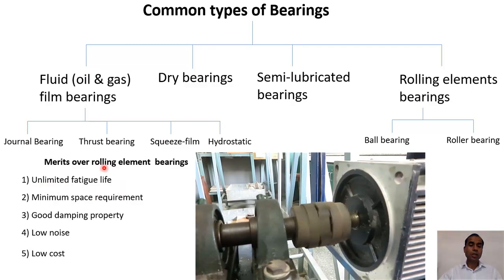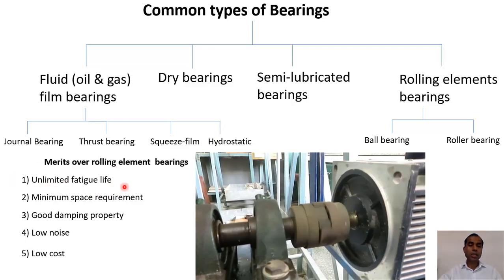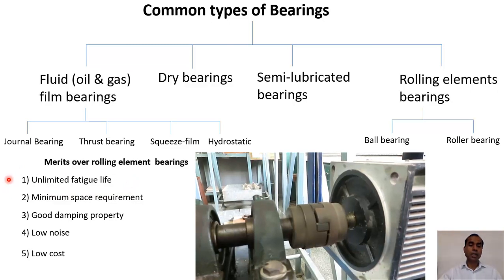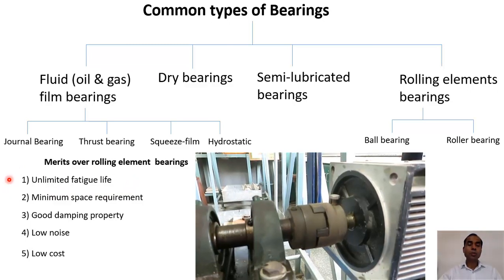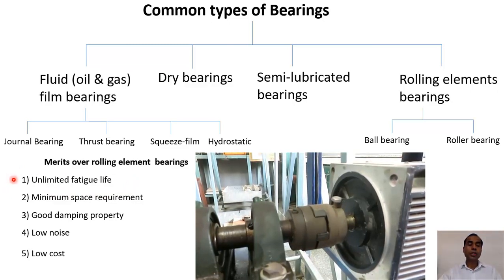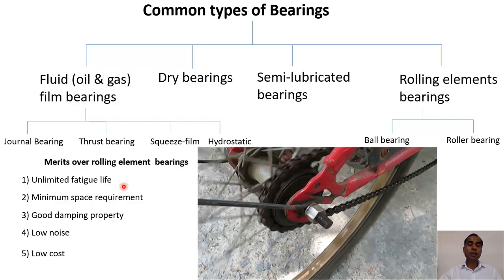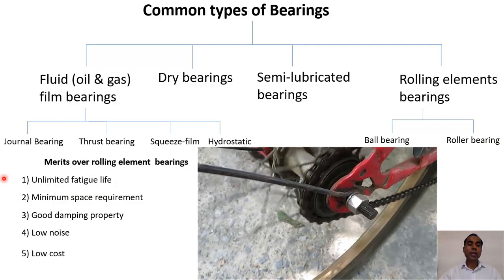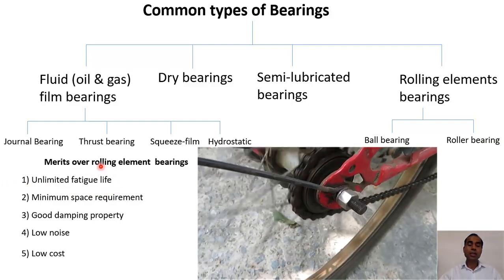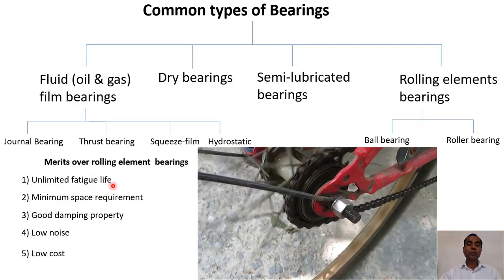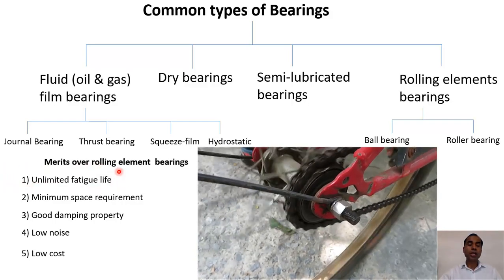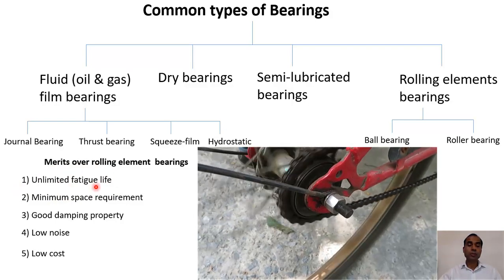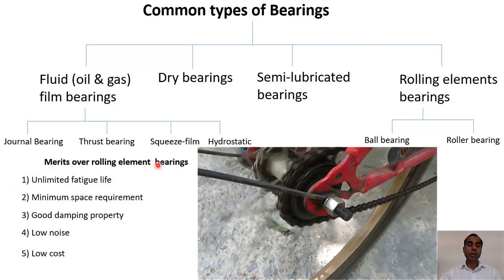One of the greatest advantages of fluid film bearings is unlimited fatigue life. The fluid film bearing works on the principle that there will be a fluid film between the two surfaces, so their life can be unlimited. As long as they run with a fluid film in between, there is no fatigue life problem as experienced with rolling element bearings.